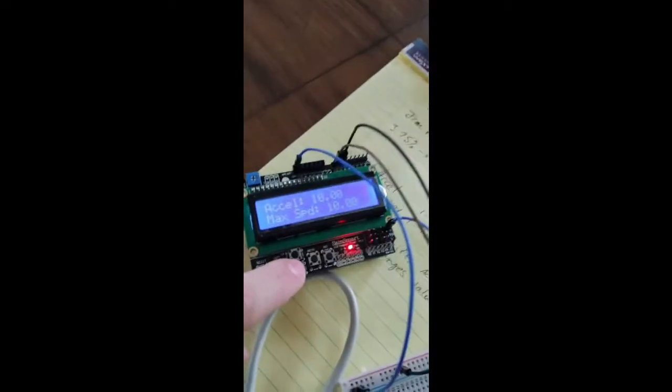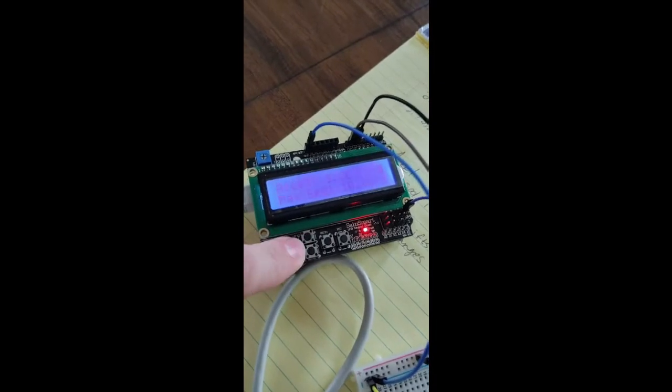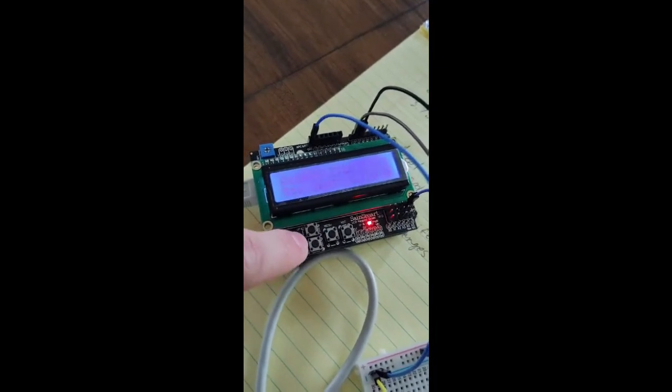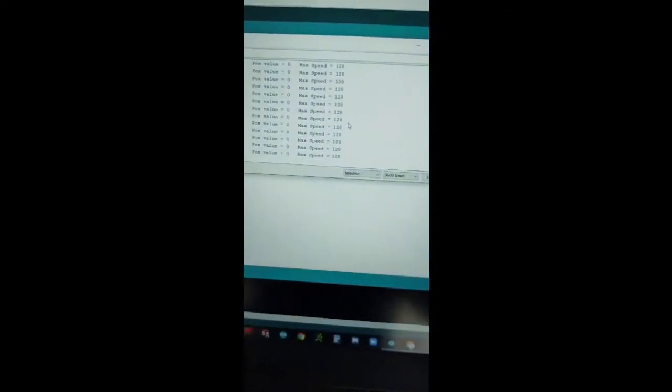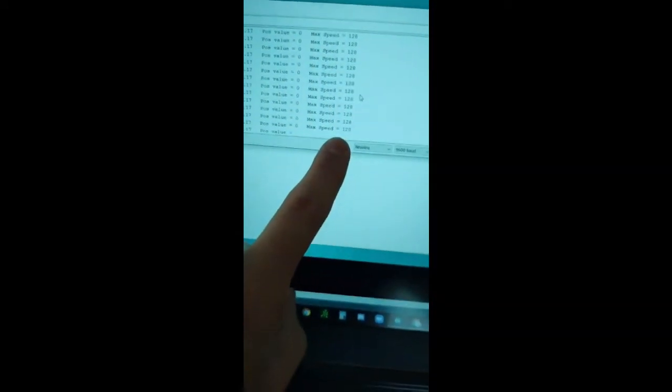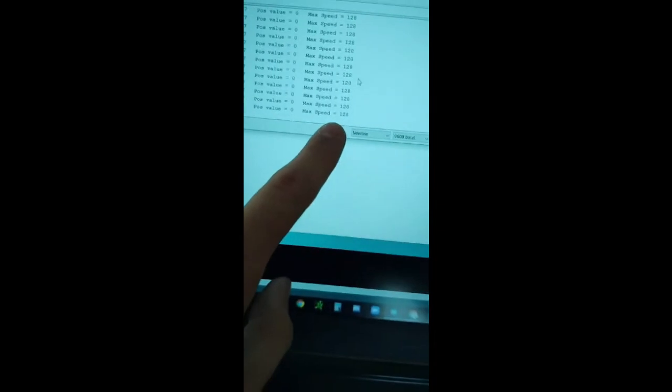Now if we change the max speed to something like 5, then you can see the max speed has changed to 128, which is about a half, so that'll only put out 2.5 volts.